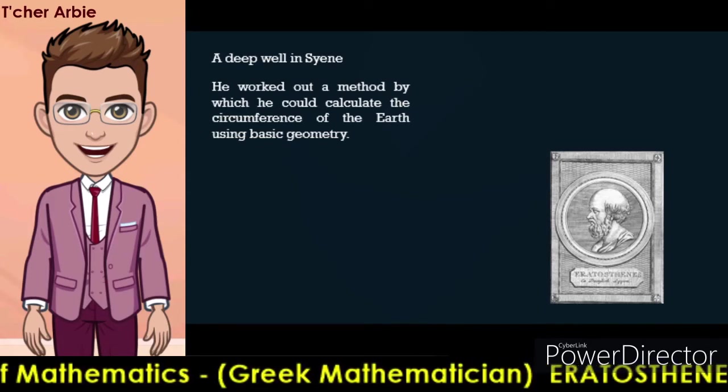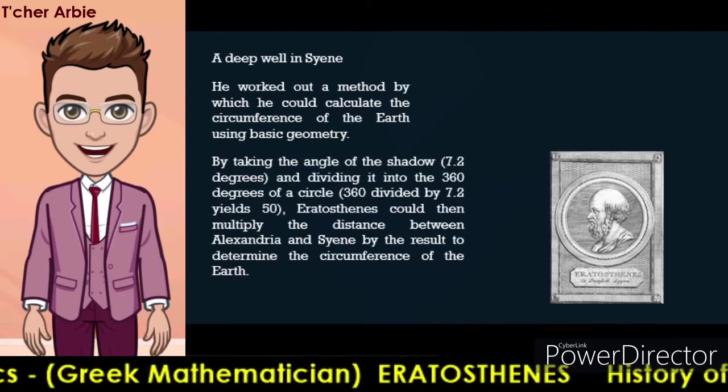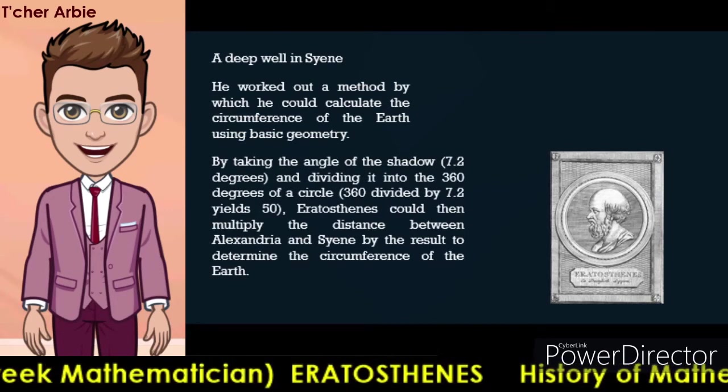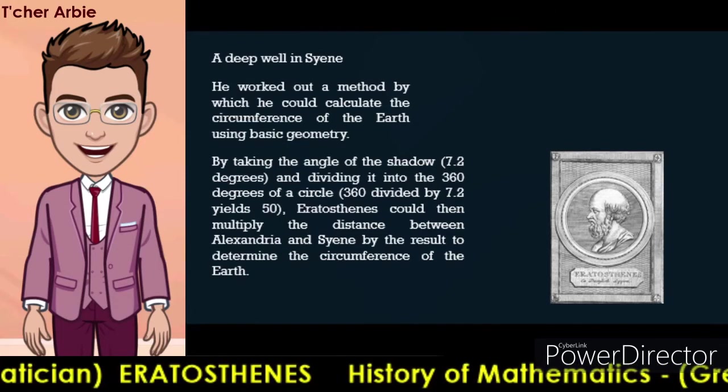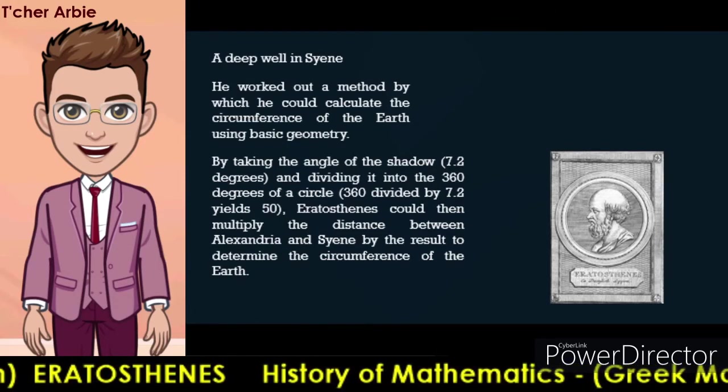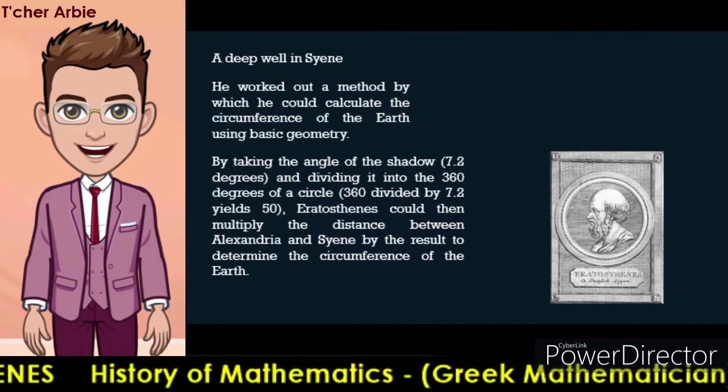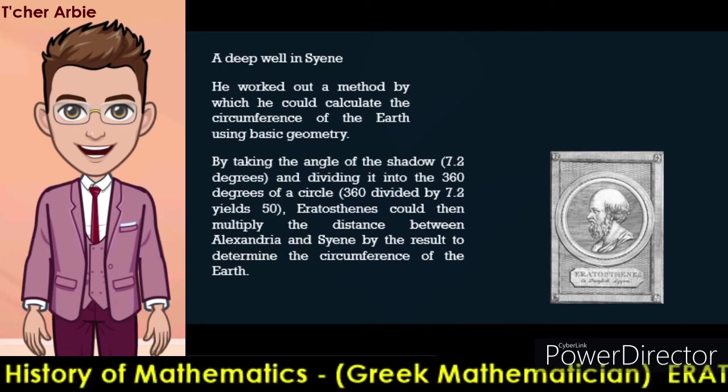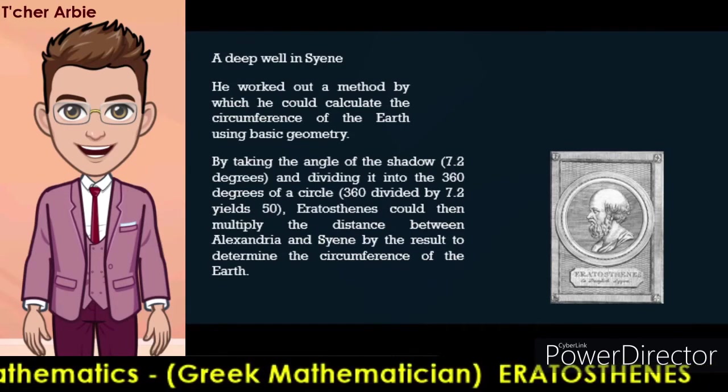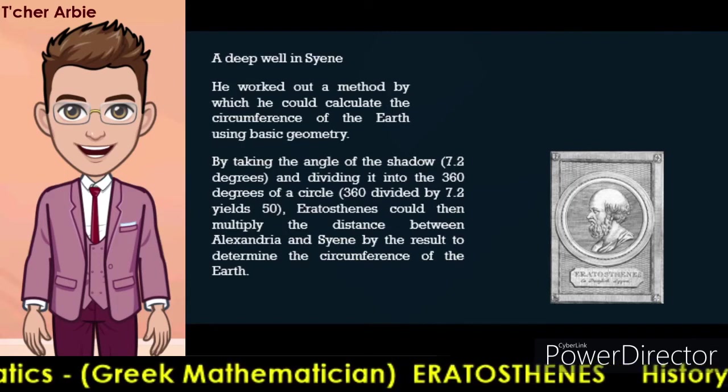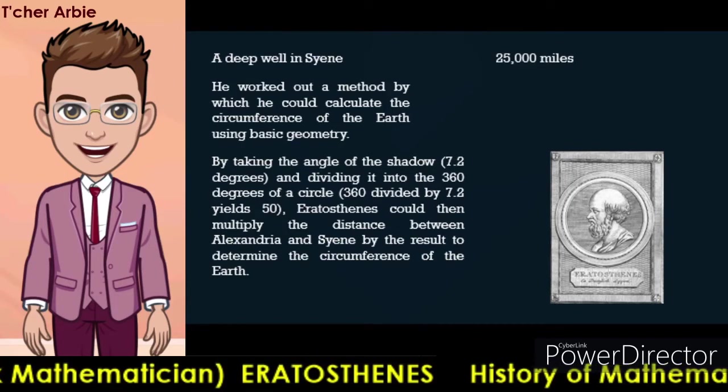He then measured the angle of the shadow in Alexandria on the solstice. By taking the angle of the shadow, 7.2 degrees, and dividing it into 360 degrees of a circle, Eratosthenes could then multiply the distance between Alexandria and Zaine by the result to determine the circumference of the earth.